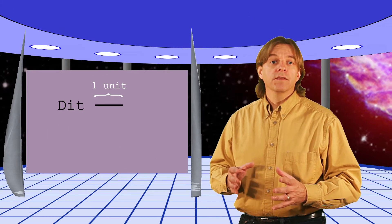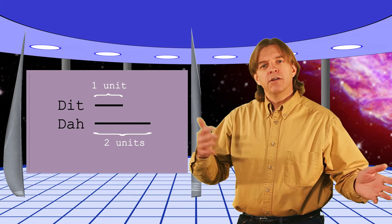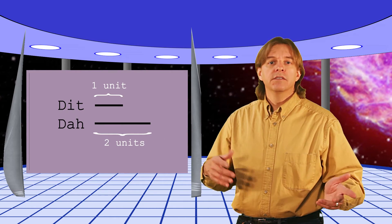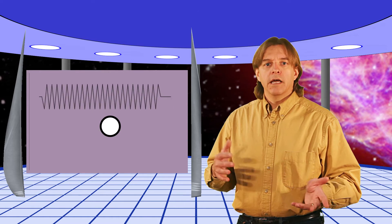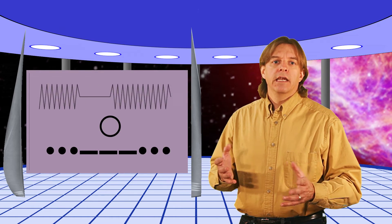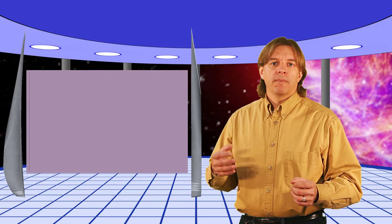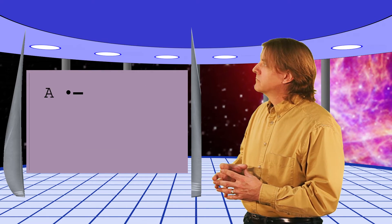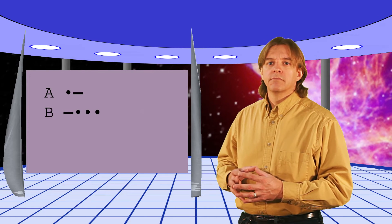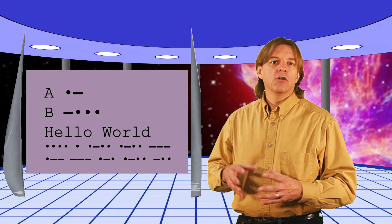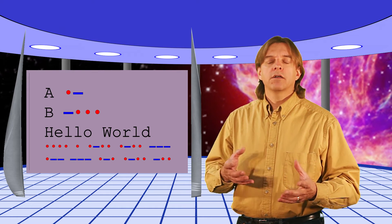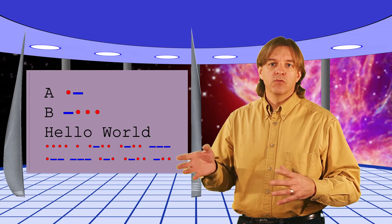And now to the topic at hand. Morse code uses short signals, called dits, and long signals, called daws, in various combinations to encode letters, numbers, and other symbols. The dits and daws can be represented by long or short sounds, or blinking lights, or any other method of indicating two states. For example, this is the letter A. And this is the letter B. And here's hello world. The interesting thing is there are two things — a dit and a daw — in the context of silence to separate letters and words, to communicate.